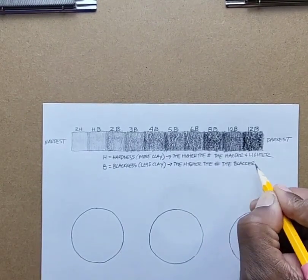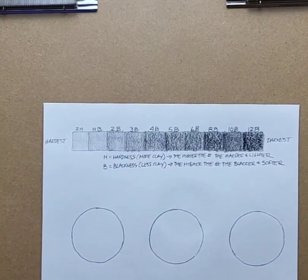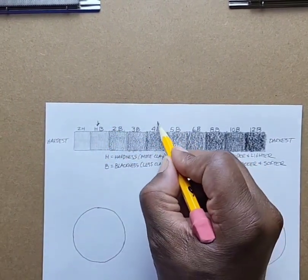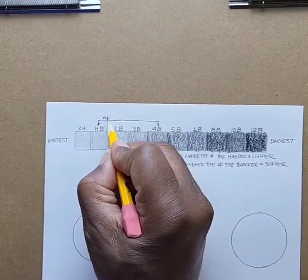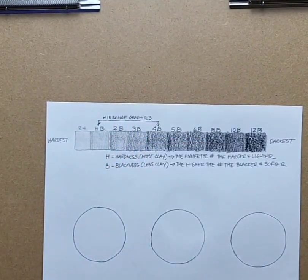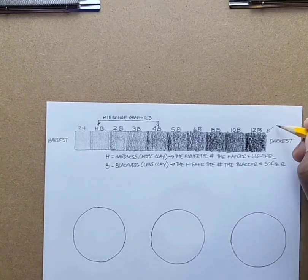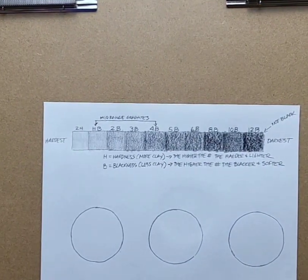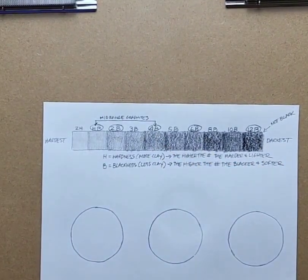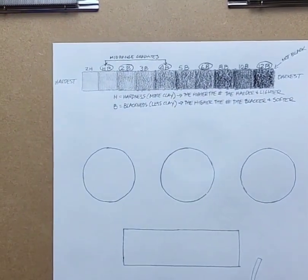Your mid ranges would be your HB to approximately your 4B or 5B, give or take the manufacturer type. If you're going to buy open stock and you don't want to get the whole set of pencils, you might want to go with an HB, a 2B, a 4B, a 6B, and maybe the darkest pencil in that set.